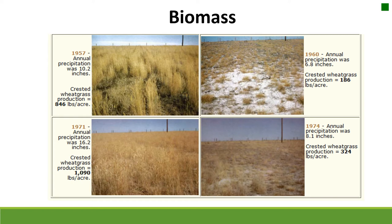Biomass fluctuates a lot with precipitation, so it's not always used to assess community health. However, it's a great tool for land management — for evaluating fuel continuity, for example, or for livestock producers wanting to know how much forage is available. Those are manageable resources, so you can be somewhat flexible based on precipitation and production.